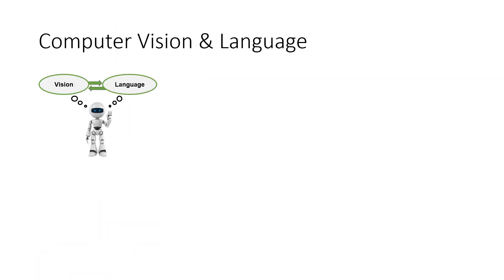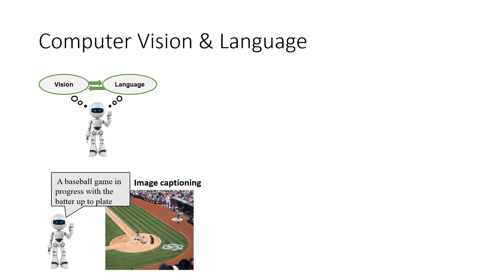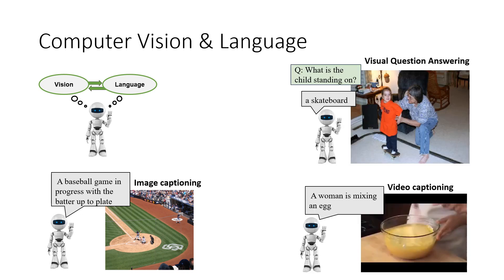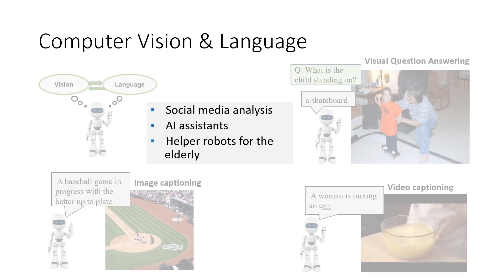There's been a lot of interest in combining computer vision and language understanding. One example task is image captioning, where the input is a photo and the output is a caption describing that photo. A similar task is video captioning. Another similar task is visual question answering, where the input is a question posed about an image and the output is the answer. These and other tasks have many applications, for example in social media analysis, in AI assistance, in helper robots for the elderly and many more.